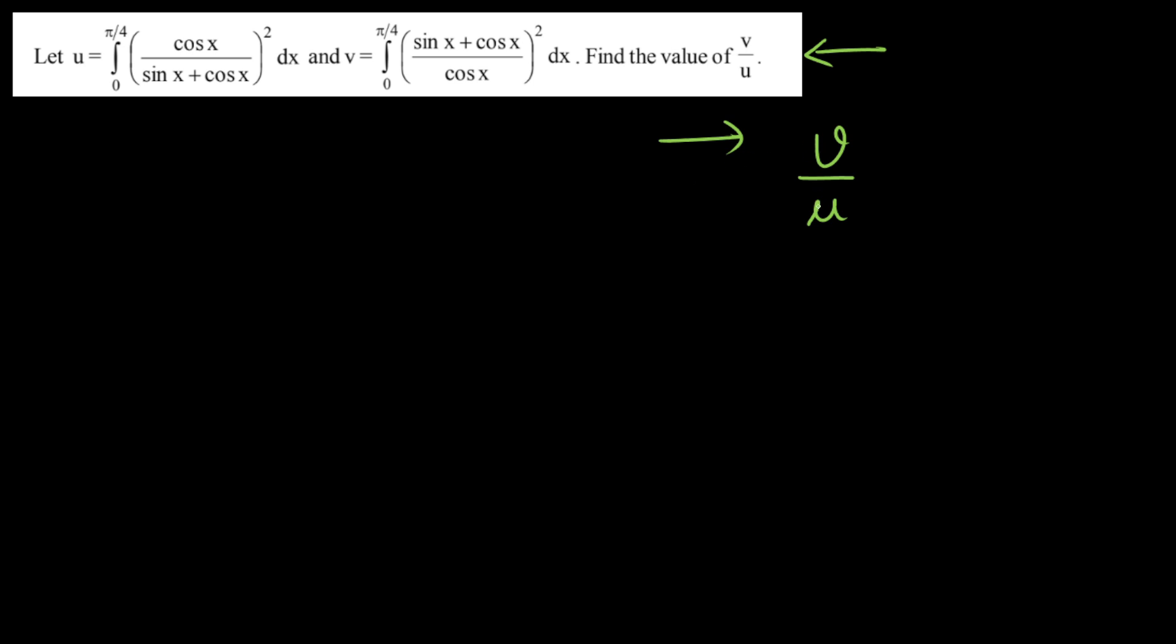Previously I have done this question and it's been asked in IIT-JEE as well as KVPY. So whenever they ask you the ratio, just calculate v as a scalar times u. The moment you calculate the relationship between these two, it's easier than calculating the exact values.